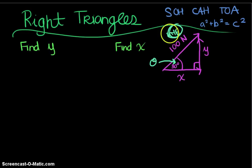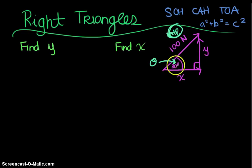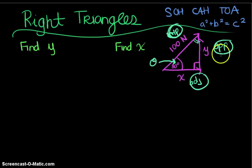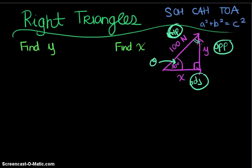The 100 Newtons is our hypotenuse because it's opposite the 90-degree angle. Relative to theta, side y is opposite that angle, and side x is adjacent. Just to point out — if you used the 60-degree angle at the top instead, 100 Newtons would still be the hypotenuse, but x would be opposite the 60-degree angle and y would be adjacent. It's really important to take a quick minute to figure out what's what, because a lot of careless mistakes are made there.